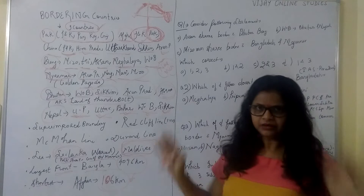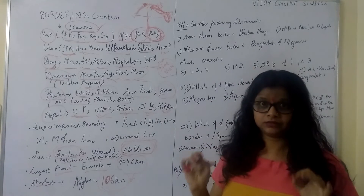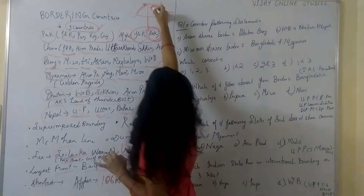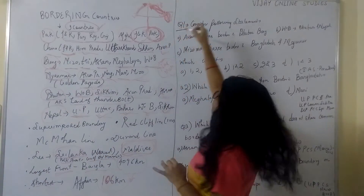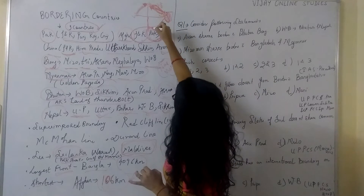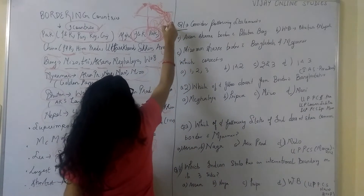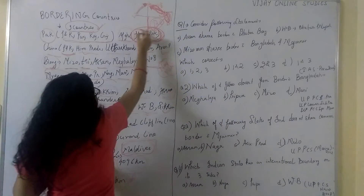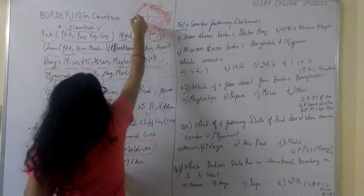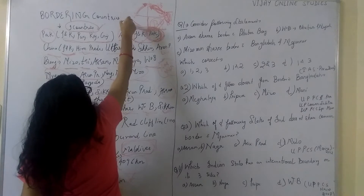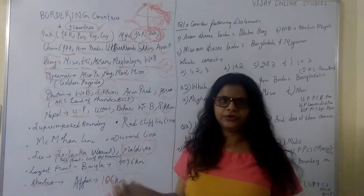So total nine countries we are bordered by. We are naturally bordered with the Himalayas in the north to east. In the east to south we are bordered with the Bay of Bengal. In the south region we are bordered with the Indian Ocean, and in the west region with the Arabian Sea. These are the natural boundaries of our nation.